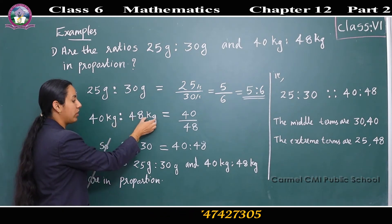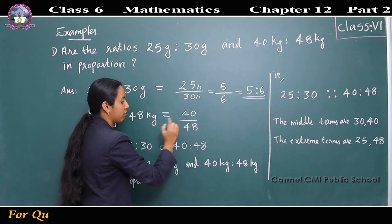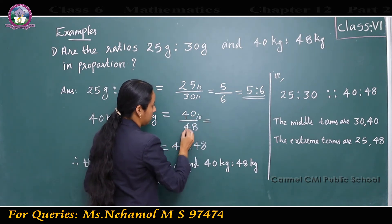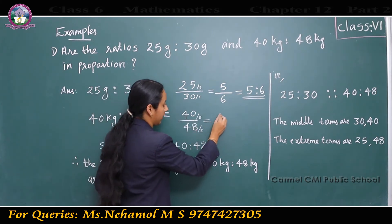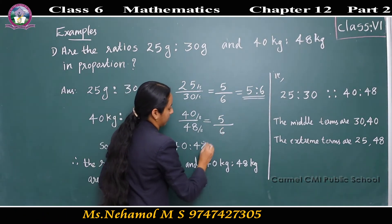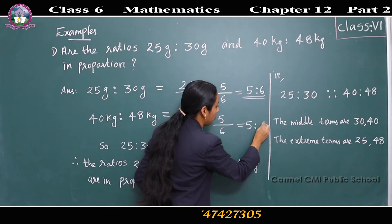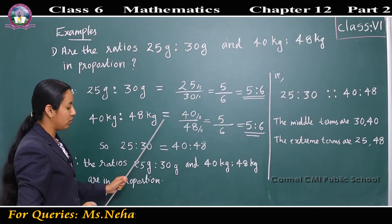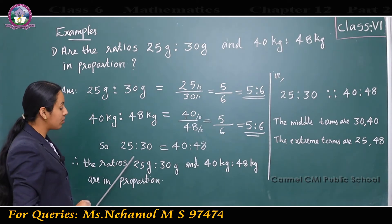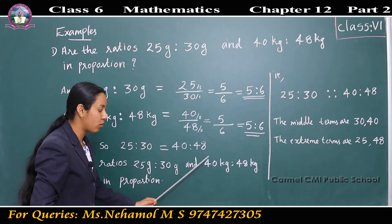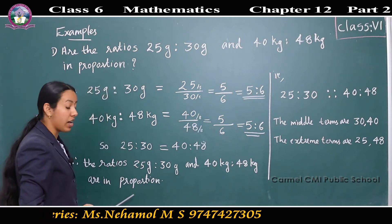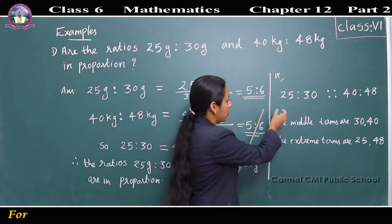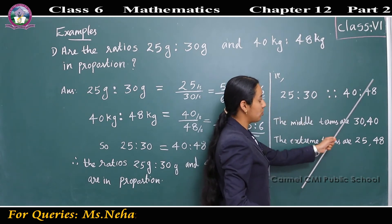For the next ratio, 40 kilograms is to 48 kilograms equals 40 by 48. Converting to lowest form: 40 is divisible by 8 and 48 is also divisible by 8, giving 5 by 6, that is 5 is to 6. Since both ratios are equal, 25 is to 30 equals 40 is to 48. Therefore the ratios 25g:30g and 40kg:48kg are in proportion, written as 25 is to 30 as 40 is to 48. The middle terms are 30 and 40, and the extreme terms are 25 and 48.